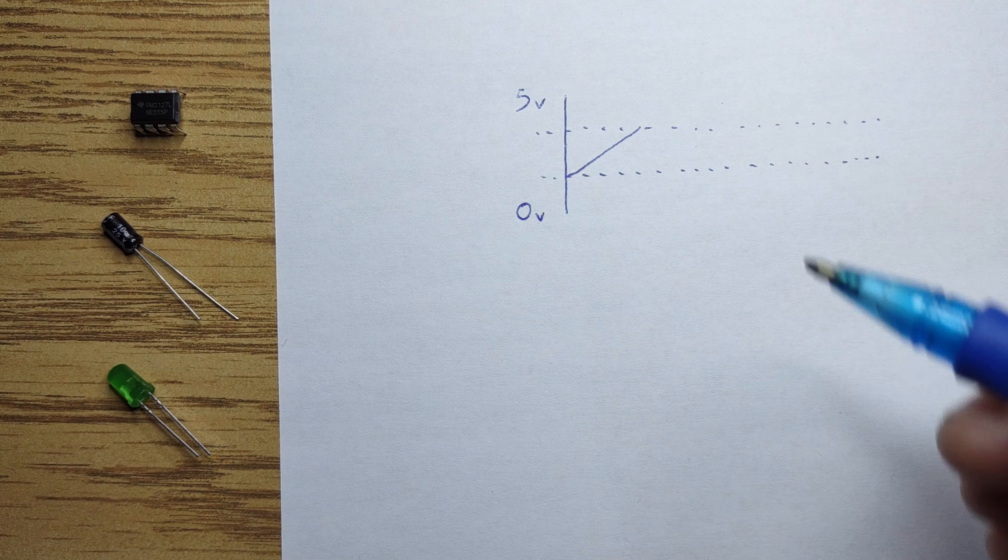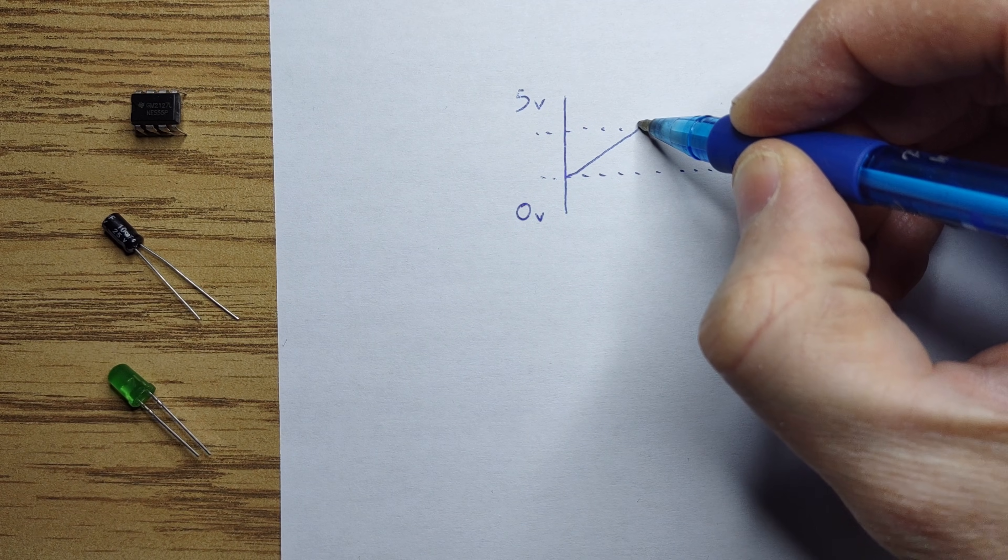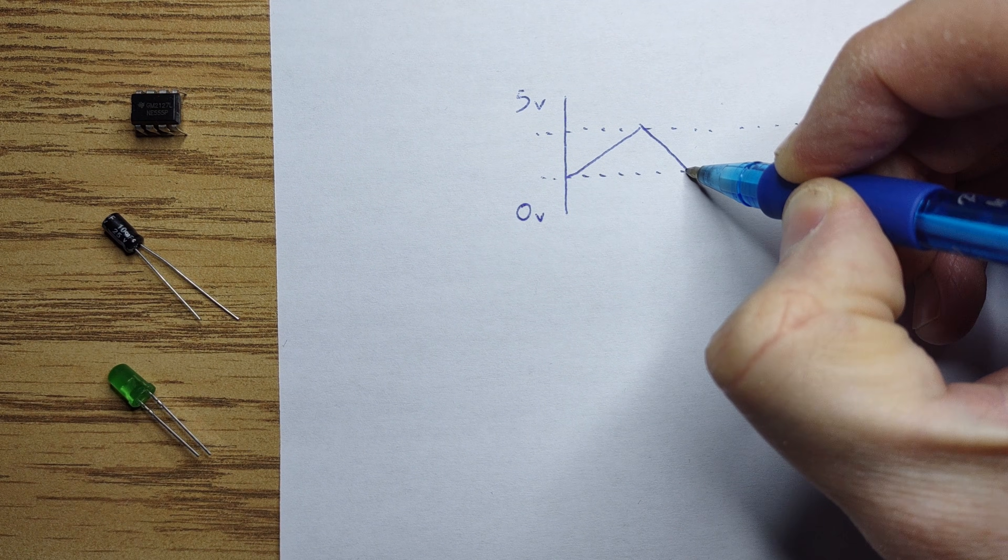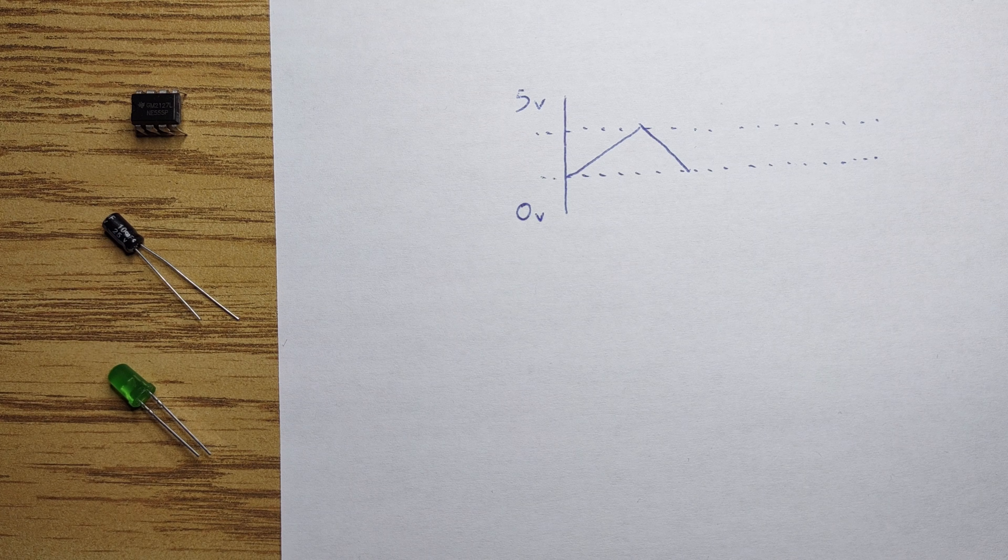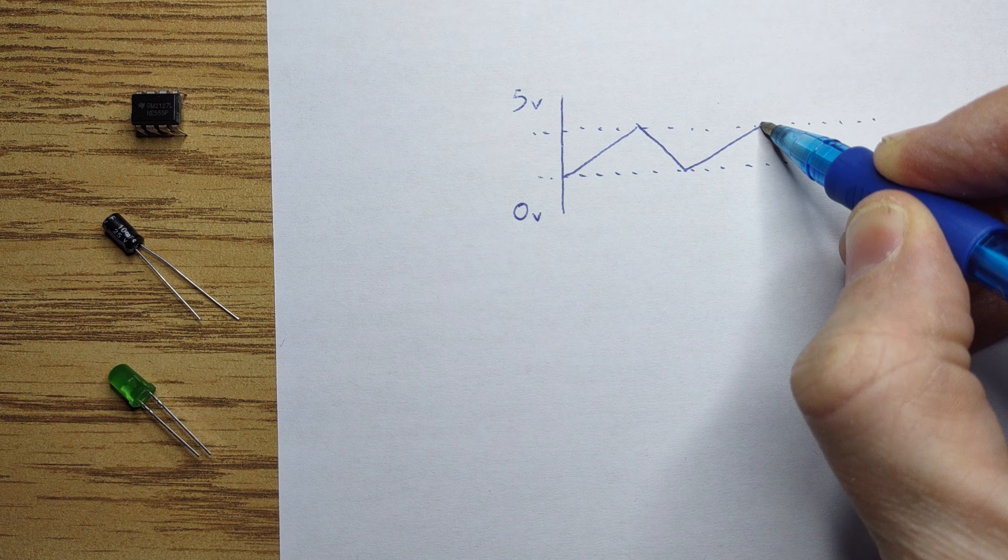Then, the first comparator will toggle the flip-flop to discharge mode. The capacitor will then discharge to the one-third point, where the second comparator will toggle the flip-flop again, and the process repeats.